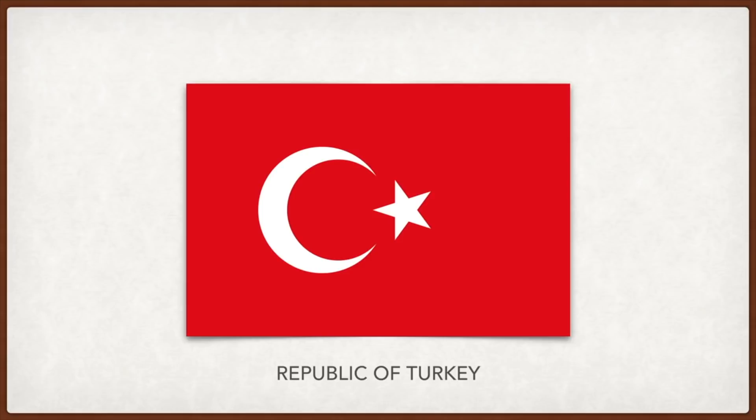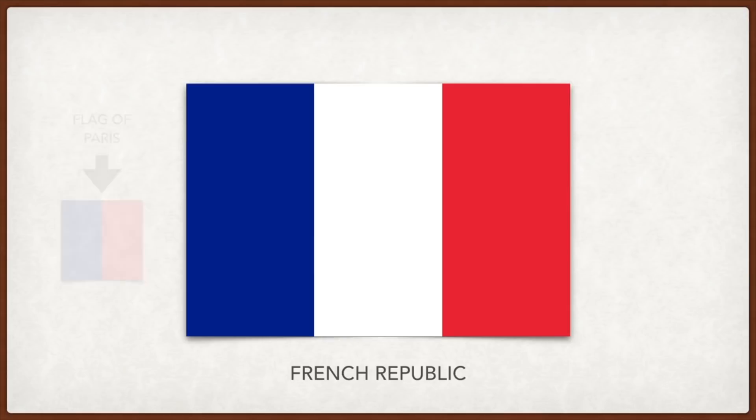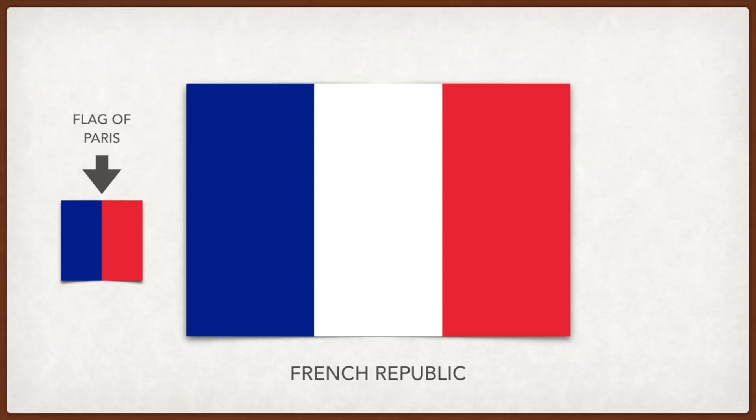France: the tricolor flag came from the revolution; blue and red were traditional colors of Paris. White was later added to nationalize the colors, making it the colors of France and not just Paris. While some saw white as a traditional color of France, others saw it as a color of the monarchy.